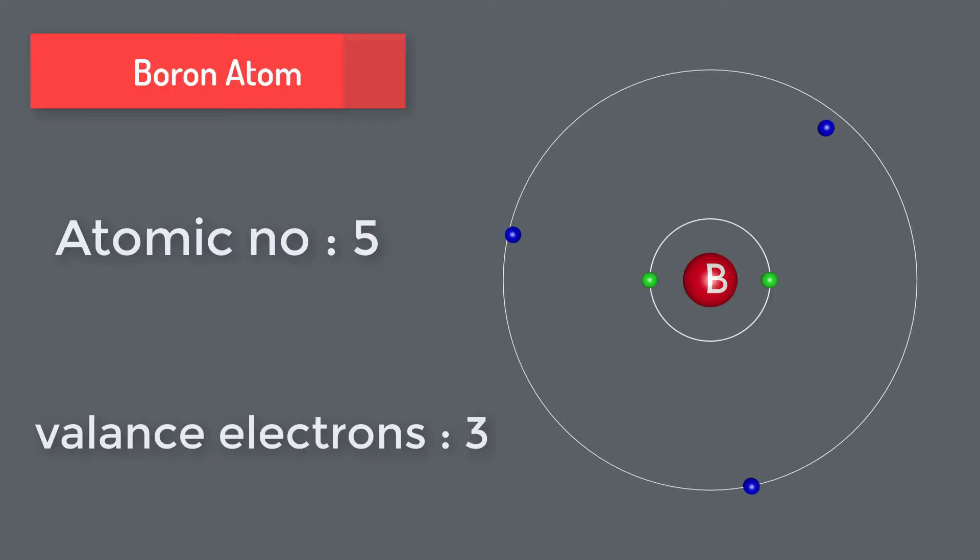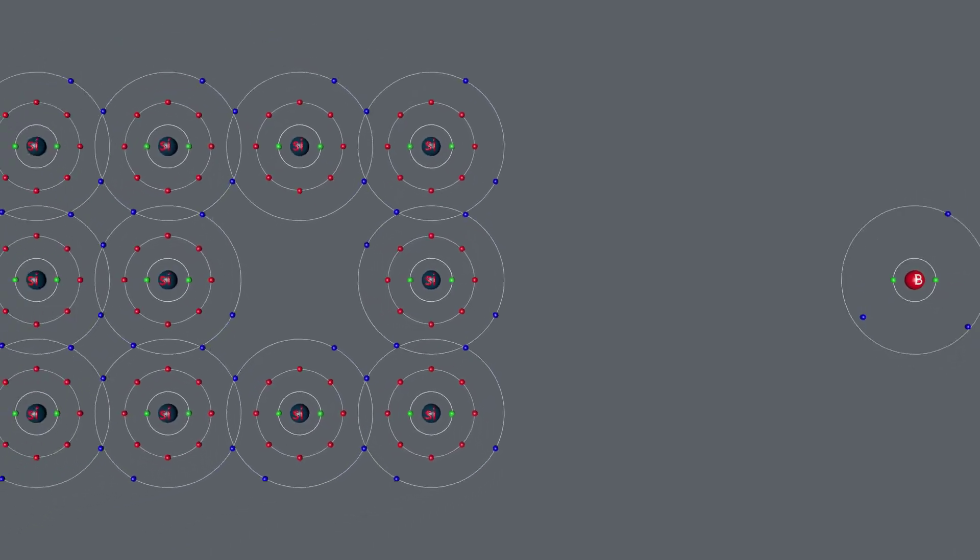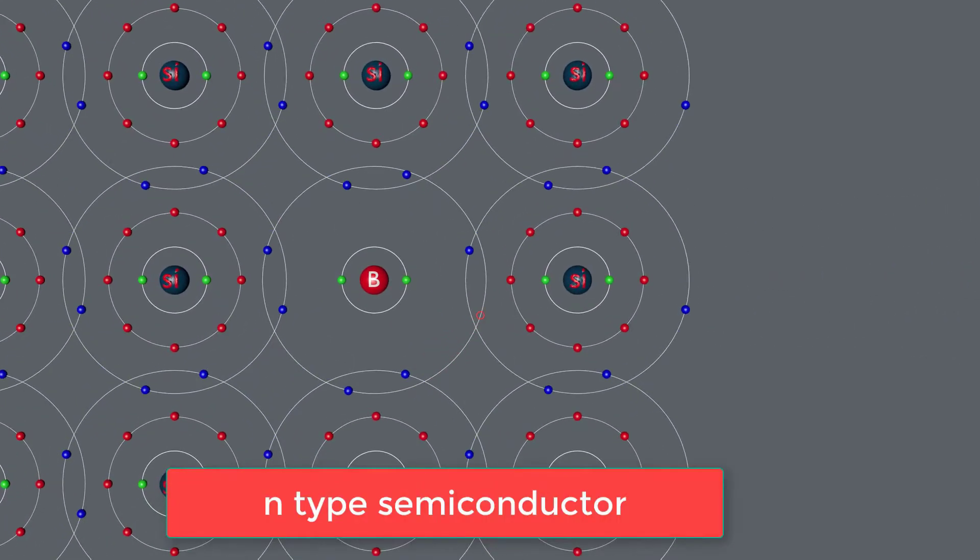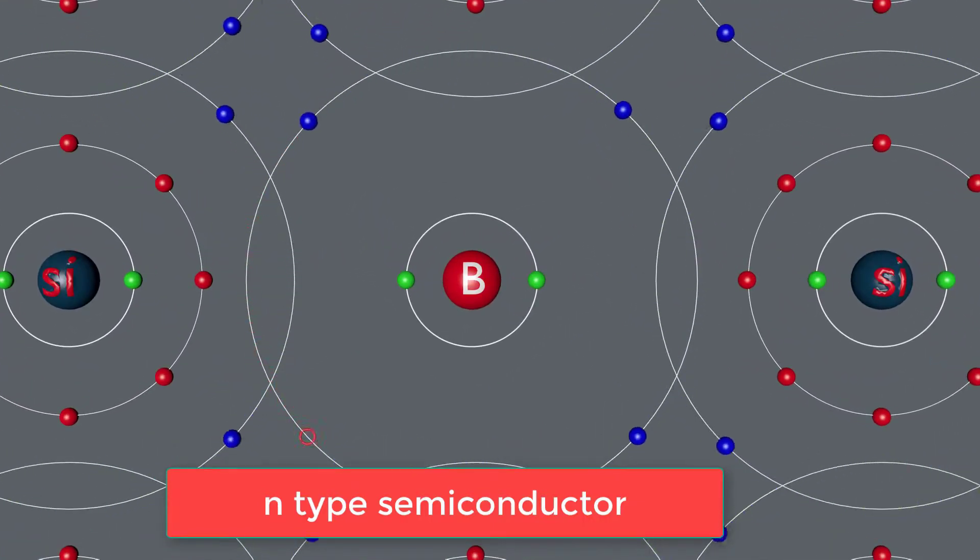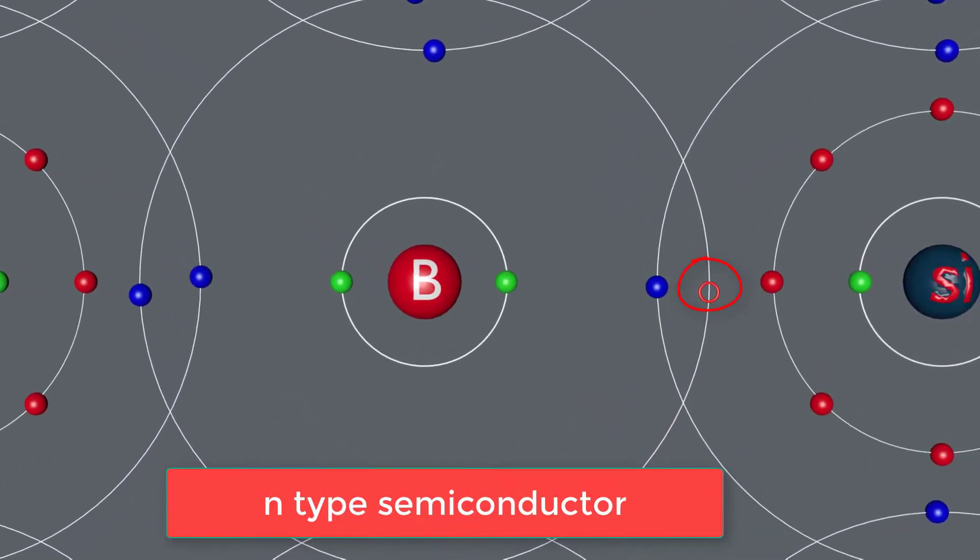Boron atom has atomic number 5 and three valence electrons in outer shell. Boron atom doping with silicon atoms forms P-type semiconductor. It has one hole in the outer shell. This freely moves.